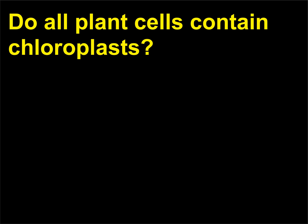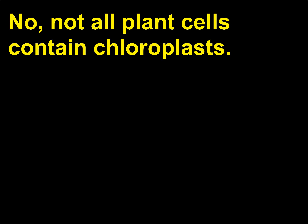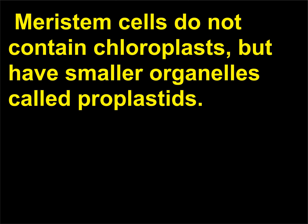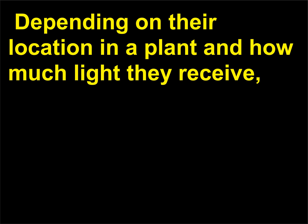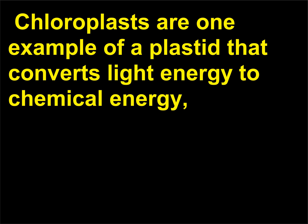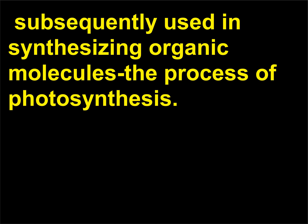Do all plant cells contain chloroplasts? No, not all plant cells contain chloroplasts. The various types of plant cells arise from meristem — rapidly dividing and undifferentiated tissue. Meristem cells do not contain chloroplasts, but have smaller organelles called proplastids. Depending on their location in a plant and how much light they receive, proplastids develop into one of several kinds of plastids with different functions. Chloroplasts are one example of a plastid that converts light energy to chemical energy, used in photosynthesis.